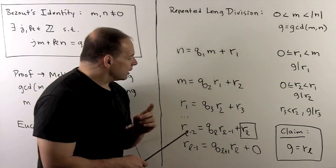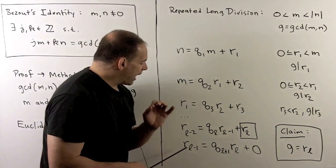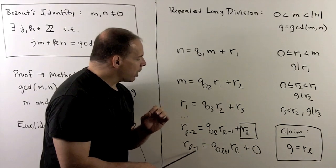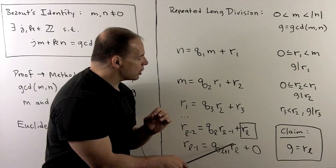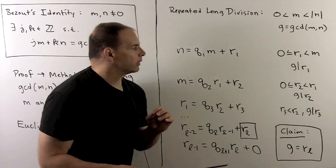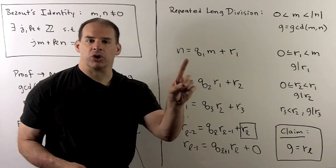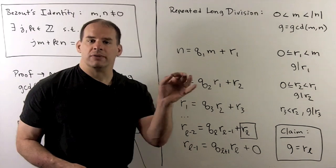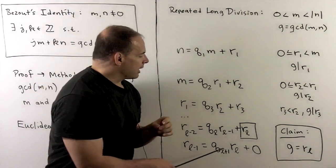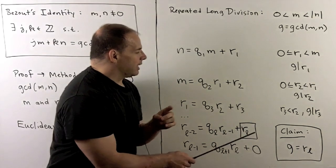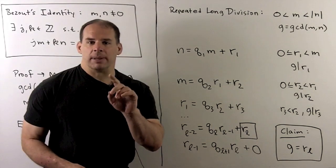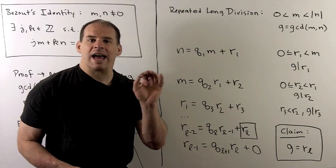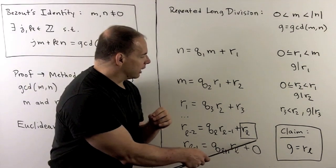Now, eventually, we're going to get to an equation where I have r sub l minus 1 equals qL plus 1, r sub l plus 0. The r's are strictly decreasing and greater than or equal to 0. So, eventually, we're going to go to 0. Now, when I hit 0, the claim is the greatest common divisor of m and n equal to the last remainder that we've calculated.